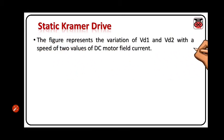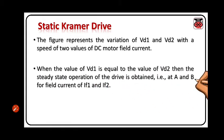The figure represents the variation of Vd1 and Vd2 with speed for two values of DC motor field current. When the value of Vd1 is equal to the value of Vd2, then the steady state operation of the drive is obtained at points A and B for field currents IF1 and IF2. You can refer to the previous figure.